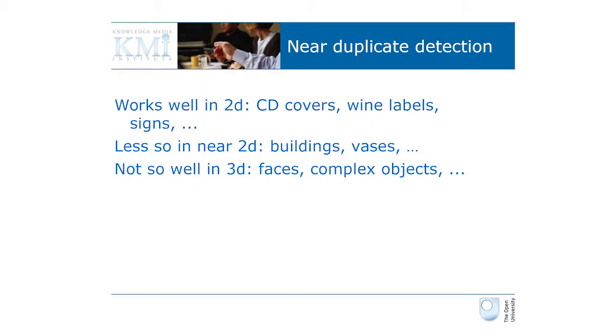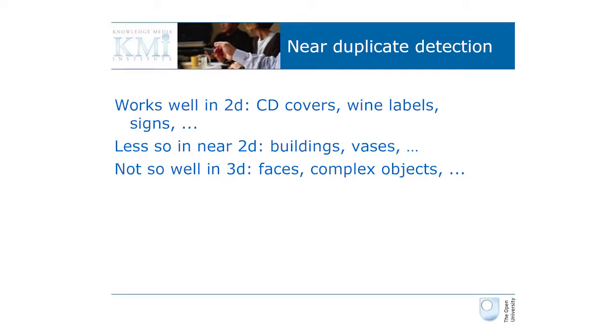Near-duplicate detection is a technique that works well in two dimensions — for example, wine labels: you photograph a wine label and find out how good the wine is. It doesn't work as well in near-2D, that's cases with two-dimensional surfaces like buildings or vases that aren't really two-dimensional. And it doesn't really work well in three dimensions — faces and quite changeable structures are not amenable to that technology.